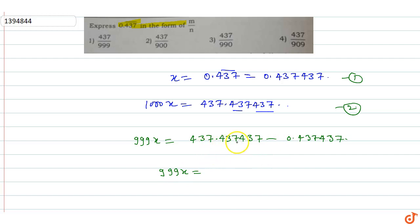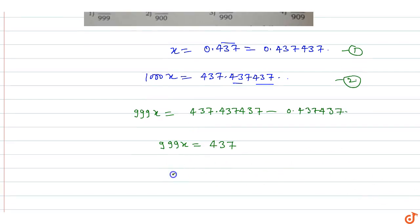The decimal parts cancel out, leaving 437. So the value of x equals 437...